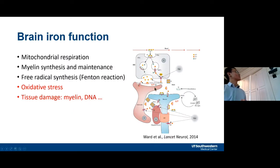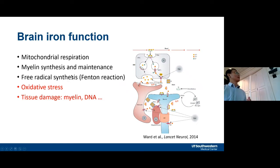Iron has many different roles in maintaining normal brain tissue function, including energy generation through mitochondrial respiration, myelination, and maintenance. Under certain circumstances such as invasion by external bacteria or viruses, iron is involved in generating free radicals to clear those external invaders. More importantly, the brain has a complicated system to regulate iron homeostasis that we still don't fully understand. If this process fails it can cause oxidative stress and tissue damage, which has been implicated in many different neurological disorders.